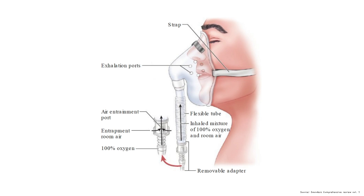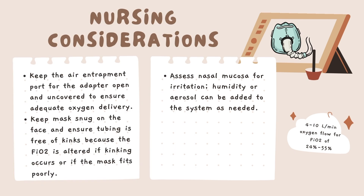With the Venturi mask, there is a mixture of 100% oxygen and room air, and a removable adapter at the bottom to choose the amount of FiO2 you want to deliver — remember, you're delivering a fixed amount. Important considerations: keep the air entrainment port for the adapter open and uncovered to ensure adequate oxygen delivery. Keep the mask snug on the face and ensure tubing is free of kinks, as FiO2 can be altered if kinking occurs or the mask doesn't fit well. Assess the nasal mucosa for irritation; humidity or aerosol can be added as needed. These three considerations are likely to show up on your exam.